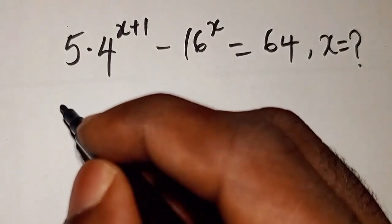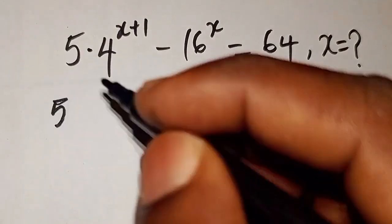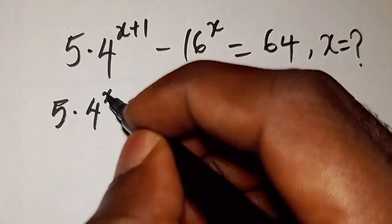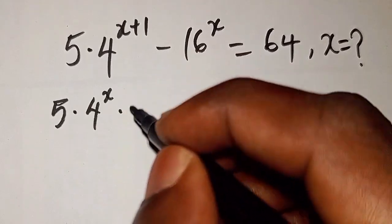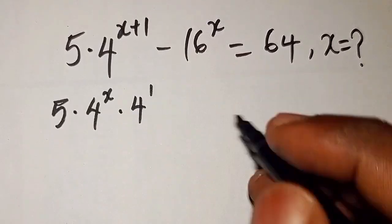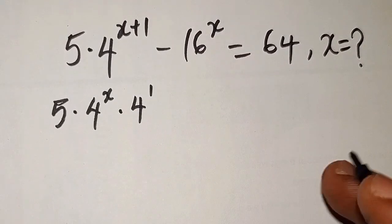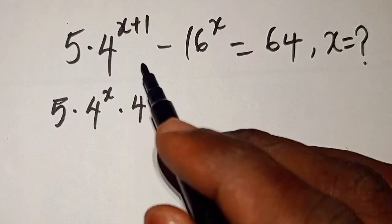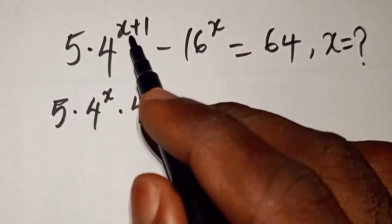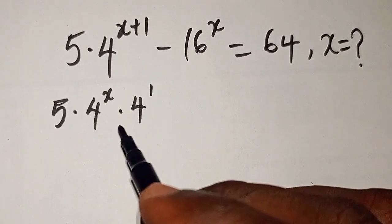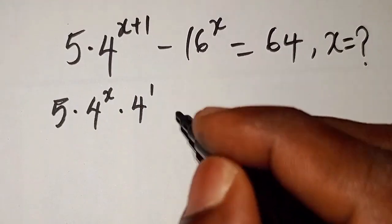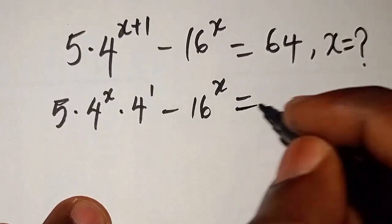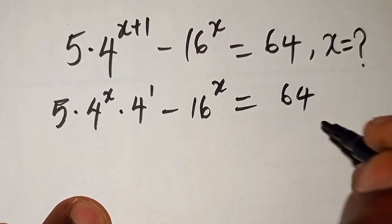I'm going to write this equation as 5 times 4 to the power of x, multiplied by 4 to the power of 1 — that is from the law of indices. So this can be split like this: 4 to the power of x plus 1 can be split, minus 16 to the power of x equals 64.